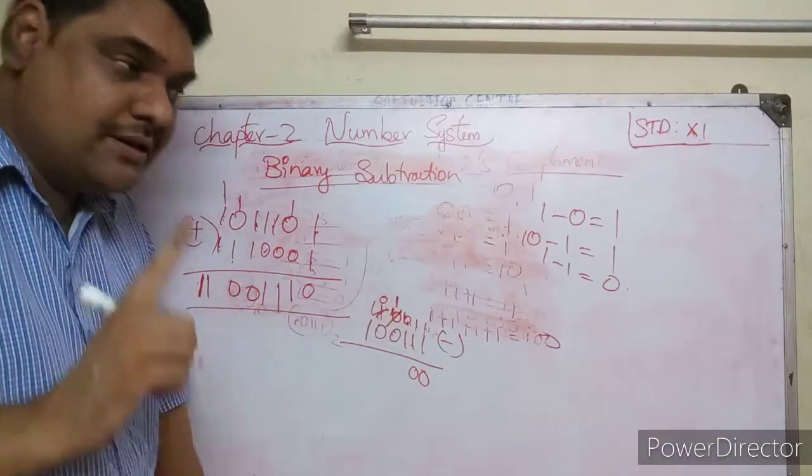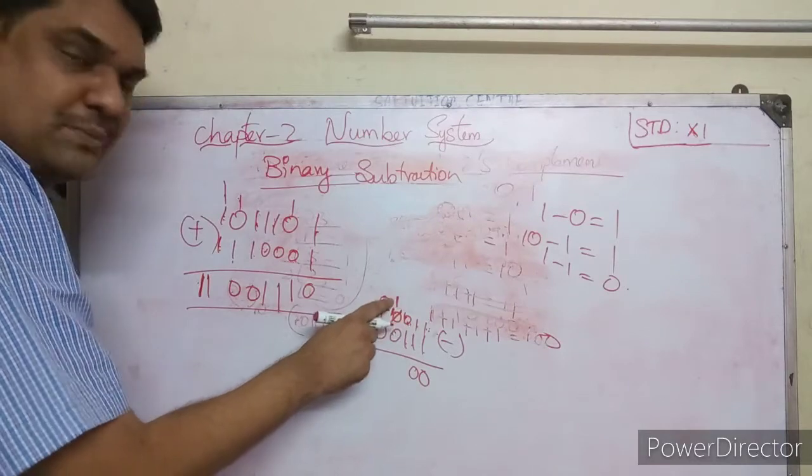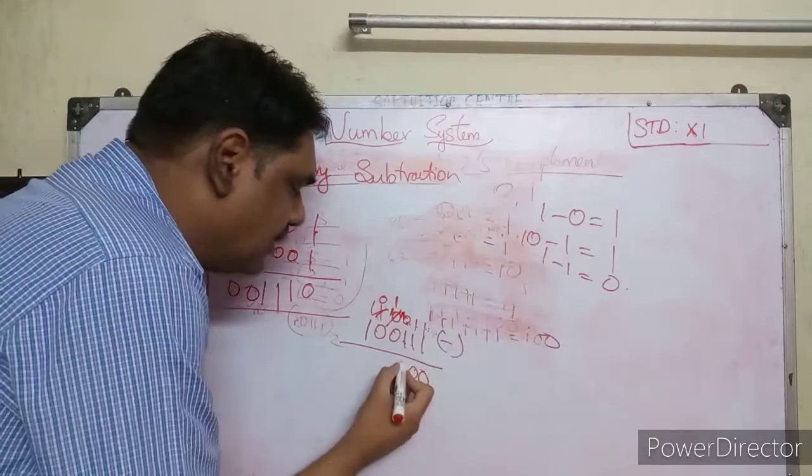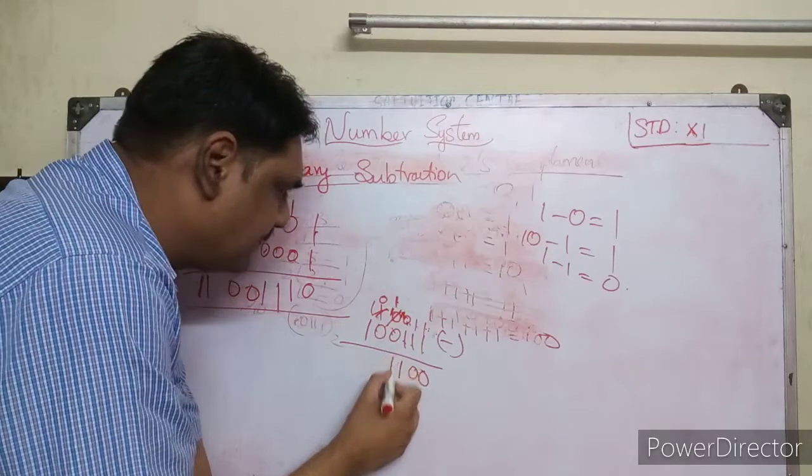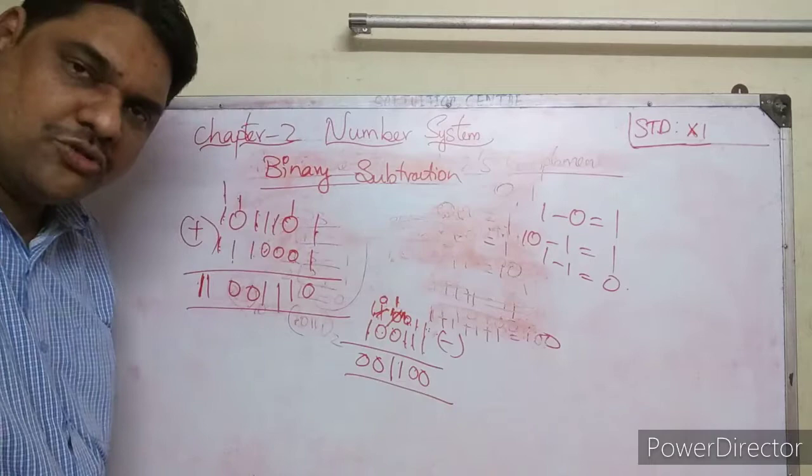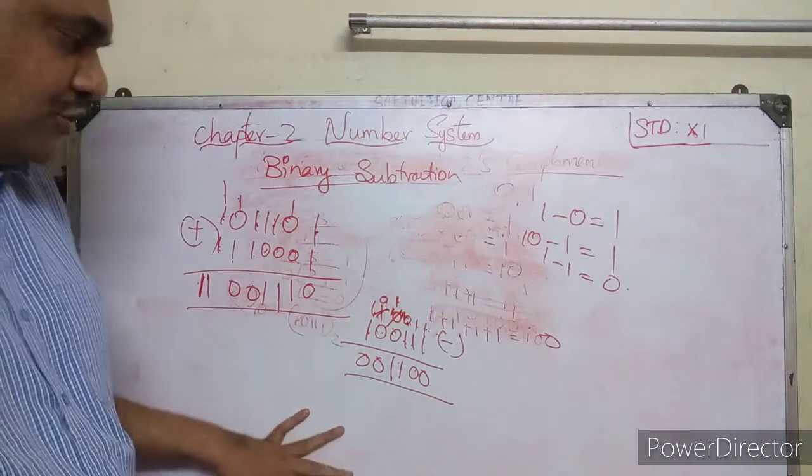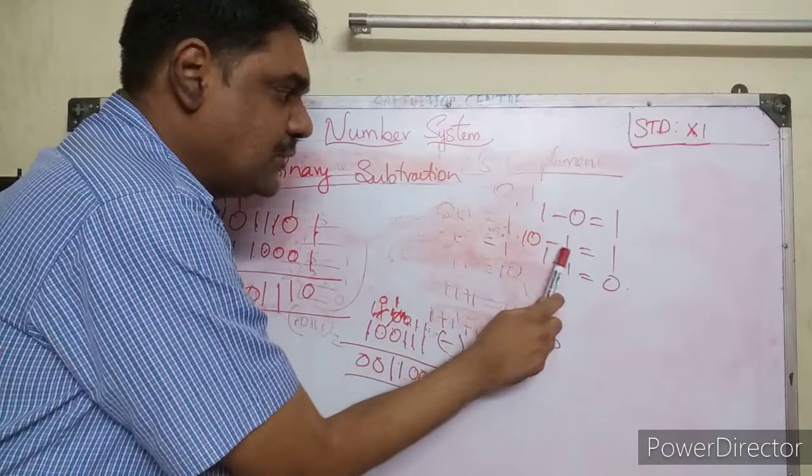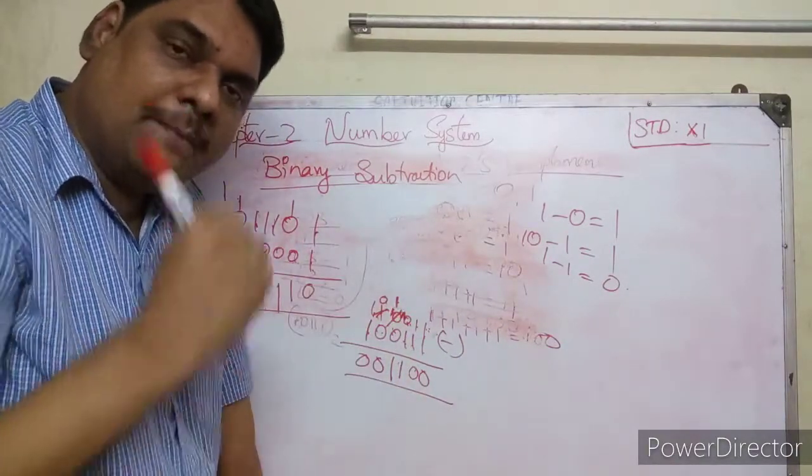When you have zero minus one, you need to borrow from the next position. So 10 minus 1 equals 1. One minus zero is one. This is the answer. This is binary subtraction.